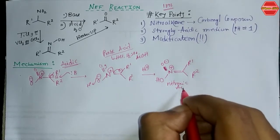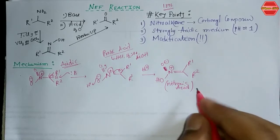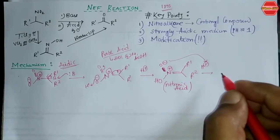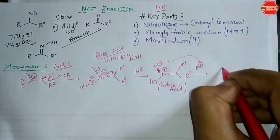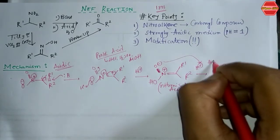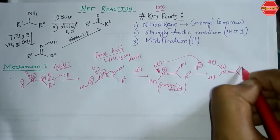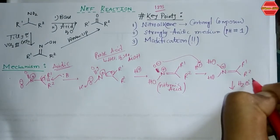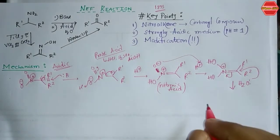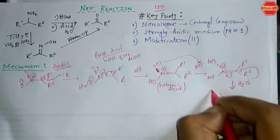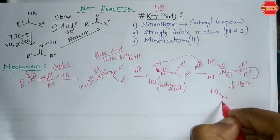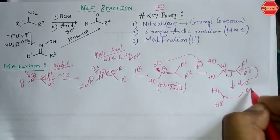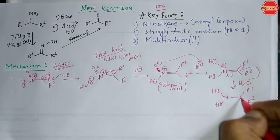The nitronic acid intermediate then has its negative charge take a proton from the acid source, giving a neutral species with R1 and R2. After this, acid hydrolysis proceeds — water present in the reaction medium attacks the intermediate.